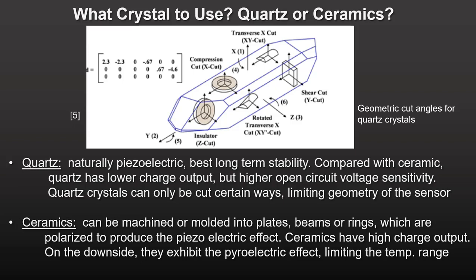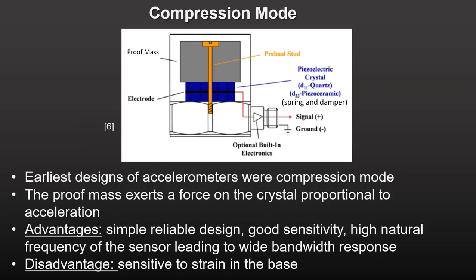Ceramics can be machined or molded into a variety of plates, beams, and annular rings, which are then polarized to produce the piezoelectric effect, providing good dimensional flexibility. They also have very high charge output, compatible with microelectronic charge amplifiers. Ceramics are pyroelectric with a relatively high temperature coefficient compared to quartz, which limits their usage to smaller temperature ranges than quartz, except for some expensive and highly specialized ceramics.